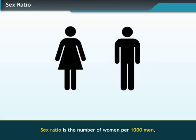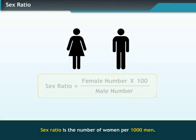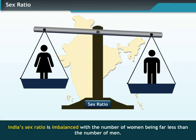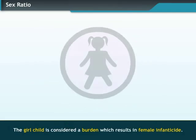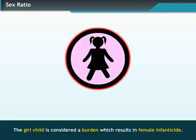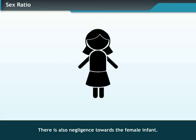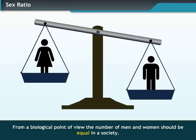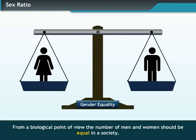The number of women per 1,000 men is referred to as the sex ratio of a country, calculated using the given formula. India's sex ratio is imbalanced with the number of women being far less than the number of men. The girl child is considered a burden, which results in female infanticide and negligence towards the female infant. From a biological point of view, the number of men and women should be equal in a society.